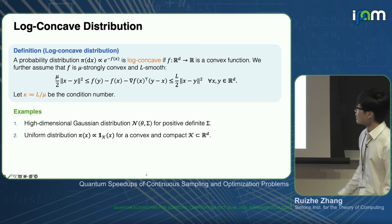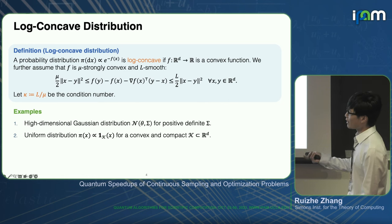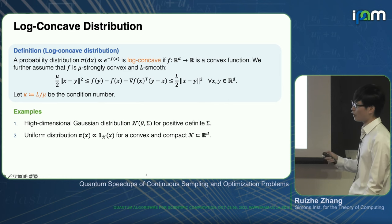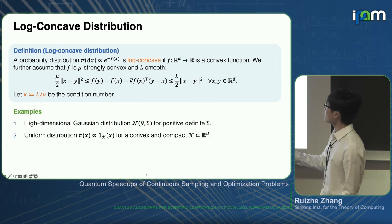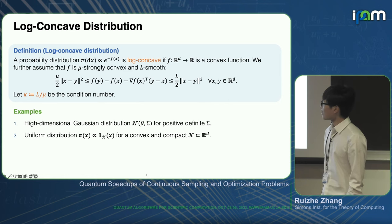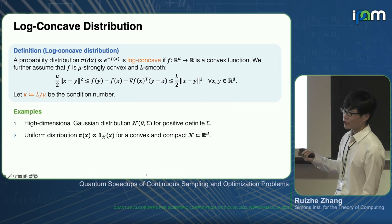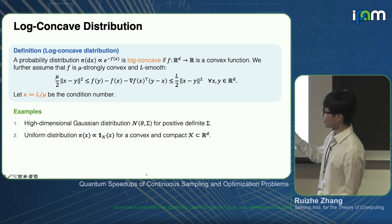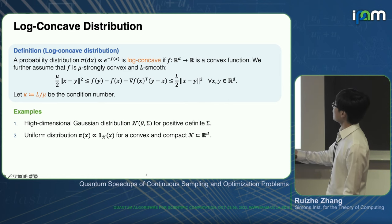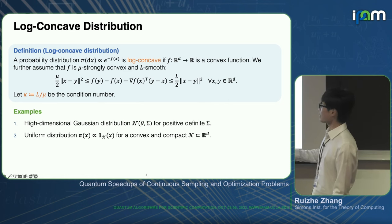Let's get started with log-concave sampling. We consider the probability distribution pi proportional to e to the minus f of x. We say it's log-concave if f from a d-dimensional space to R is a convex function. We assume f is also mu-strongly convex and L-smooth, meaning the Hessian of f is bounded by mu and L. We define kappa to be L over mu, the condition number of f—a very important parameter characterizing sampling complexity. Examples include high-dimensional Gaussian distributions and the uniform distribution over a convex body.